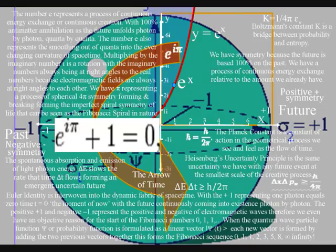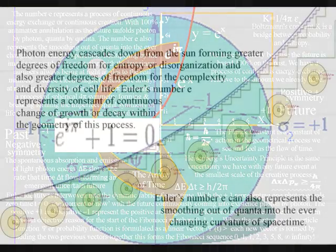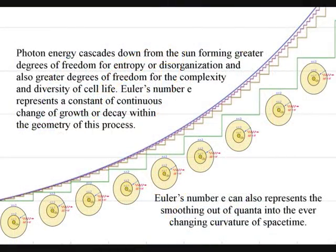Also, the number E represents the smoothing out of quanta into the ever-changing curvature of space-time.